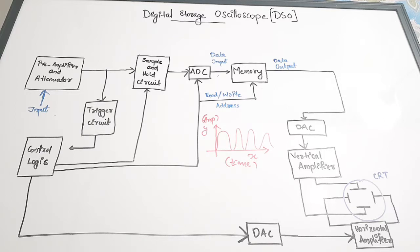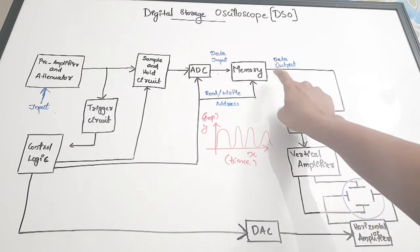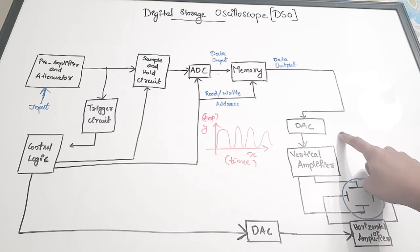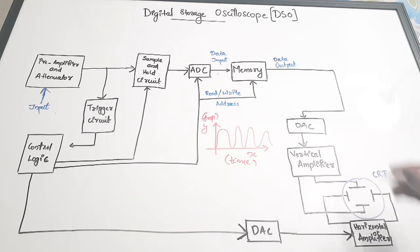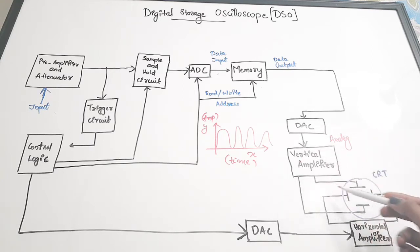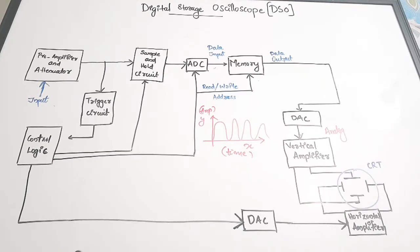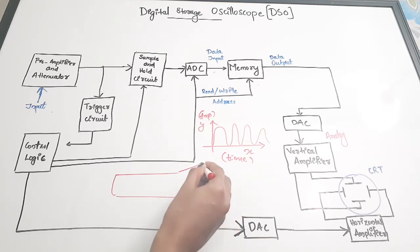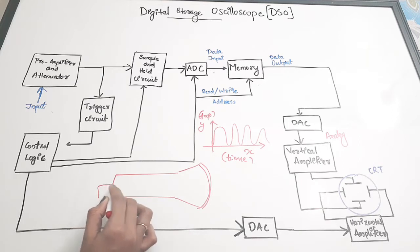The data is stored in digital format. We also have to display the data on a screen, showing the same waveform we are feeding. If you are feeding a sine wave, we don't require digital form display but the exact sine wave itself. So the digital data is taken from memory - data output - and given to a D-to-A converter. It will be converted back to analog form, and this output will be analog. It is then given to the vertical amplifier and to the CRT - the cathode ray tube.